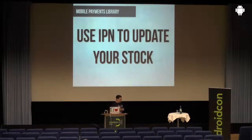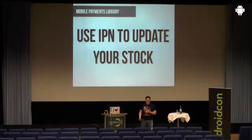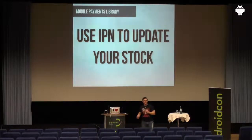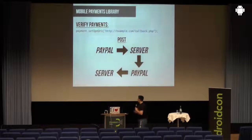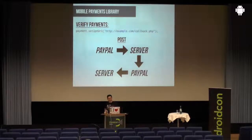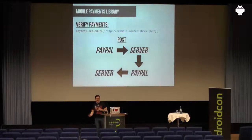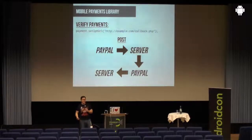We've also got IPN — Instant Payment Notification. Your app works and processes payment, but your backend needs to know about this. You provide your own server URL, and it posts against that server, enabling you to control what happened. PayPal does a POST after the payment to your server, your server verifies with PayPal, and then you can store this in your database, send an email, update your stock items, whatever you want.